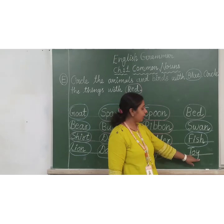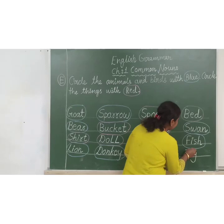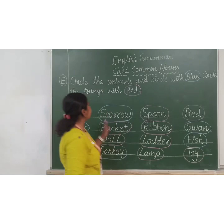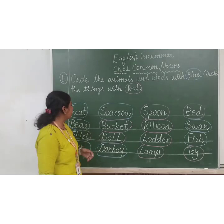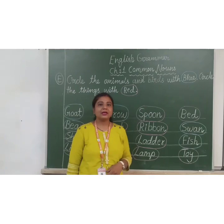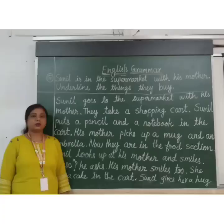T-O-Y. Toy. Aap sab khelते ho na? Khilone se. Yes, this is a thing. So here you have to circle with red color. So it is easy, na? You can do it by yourself. Yes.